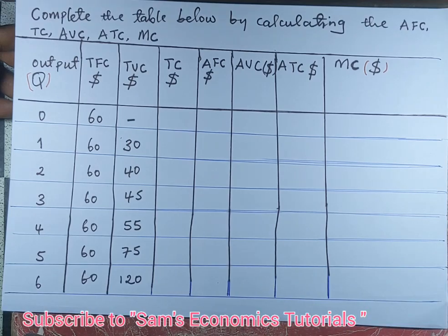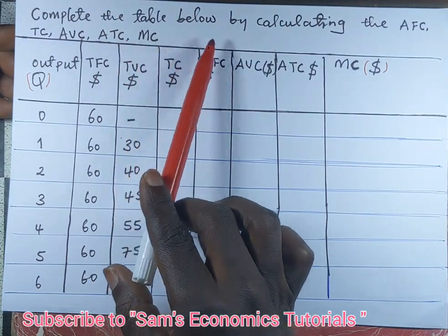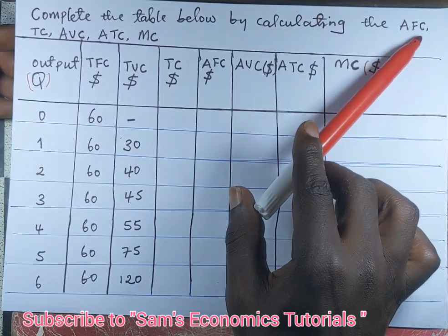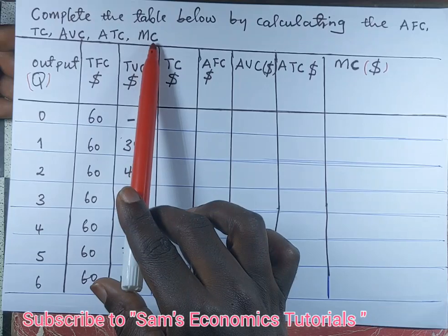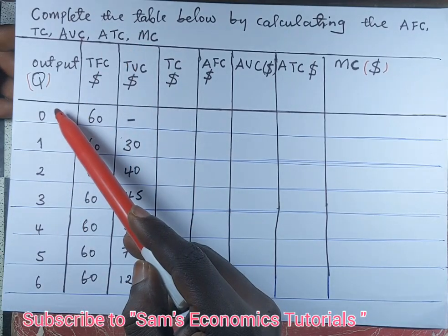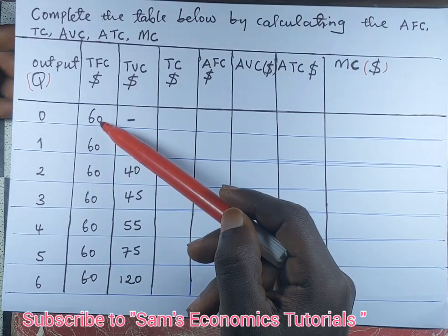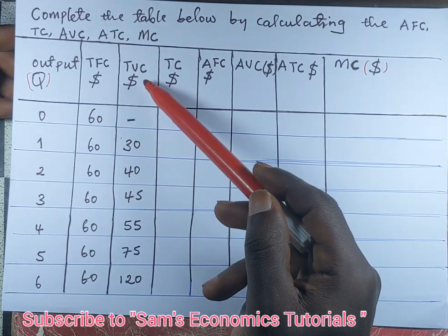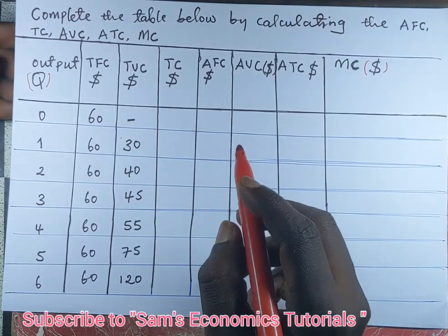Welcome to another session of Sam's Economics Tutorials. In today's video we are going to look at how to calculate total cost, average fixed cost, and marginal cost. The question asks us to complete the table by calculating average fixed cost, total cost, average variable cost, average total cost, and marginal cost (MC). The output has been given, total fixed cost is 60, and the total variable cost has been given.